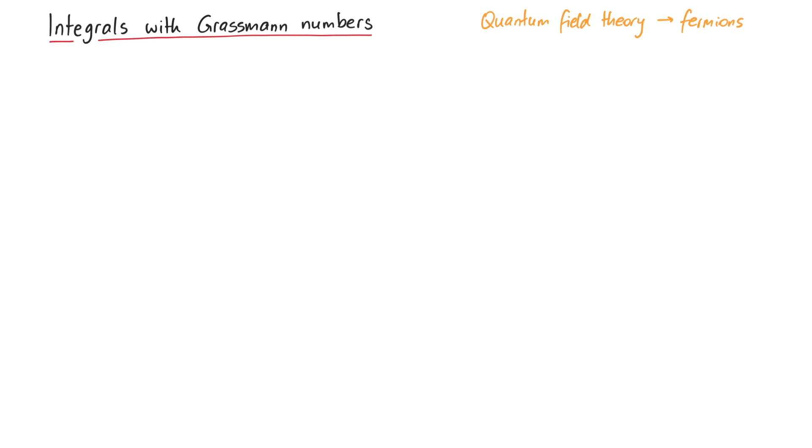The special thing about Grassmann numbers is that they do not commute. For usual numbers, 4 times 3 is the same as 3 times 4, but for two Grassmann numbers, theta1 and theta2, their product is not the same if we exchange them.